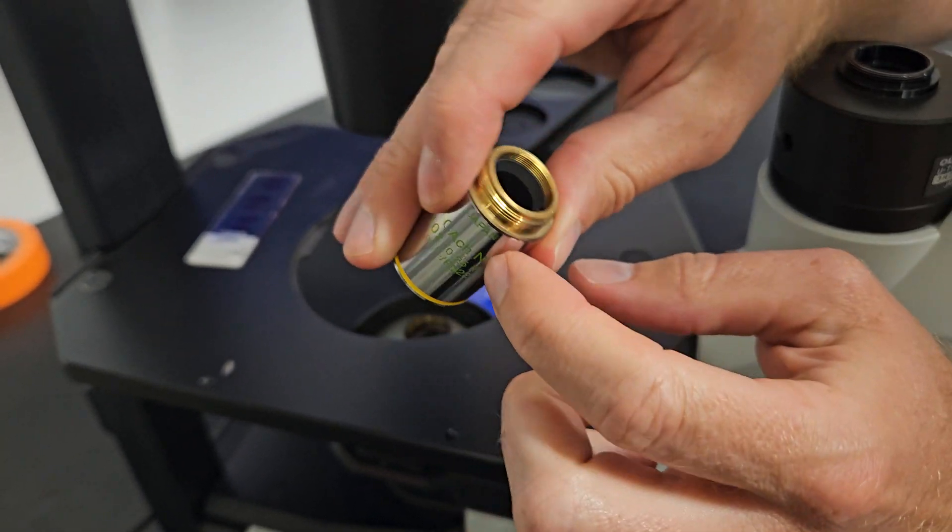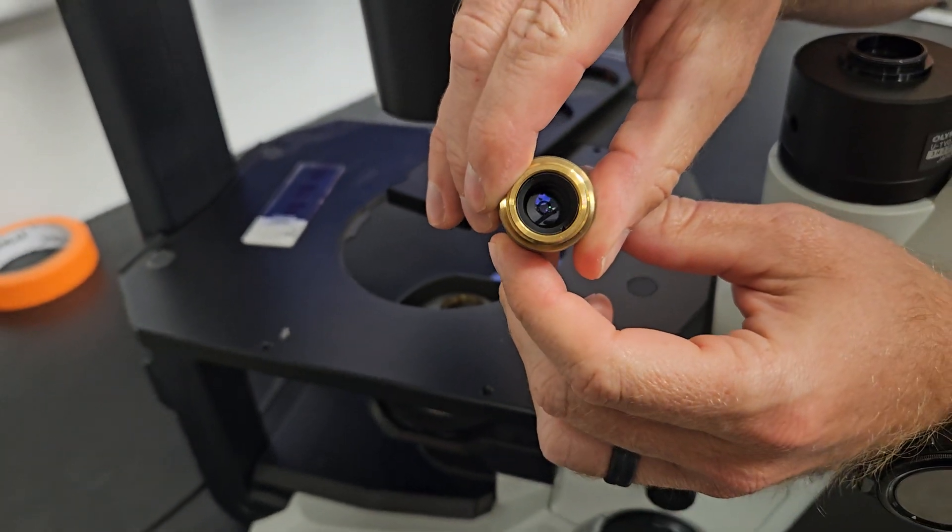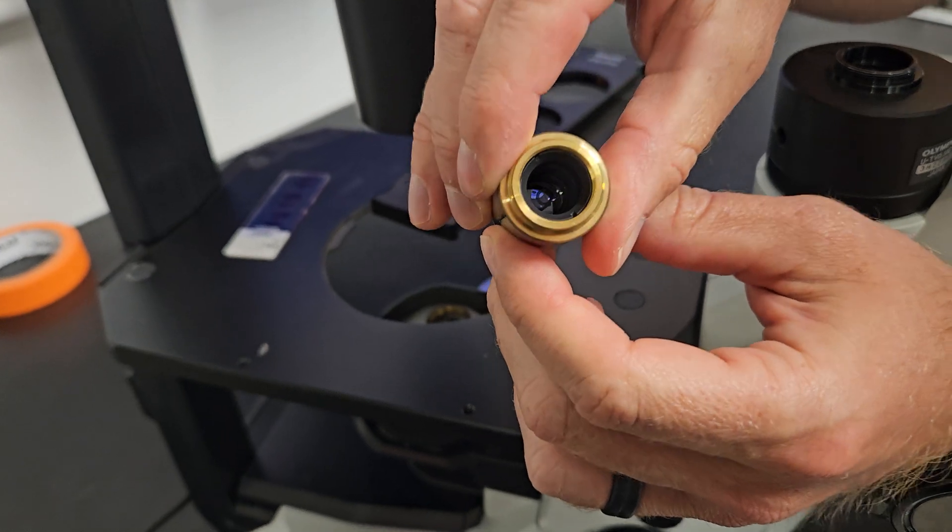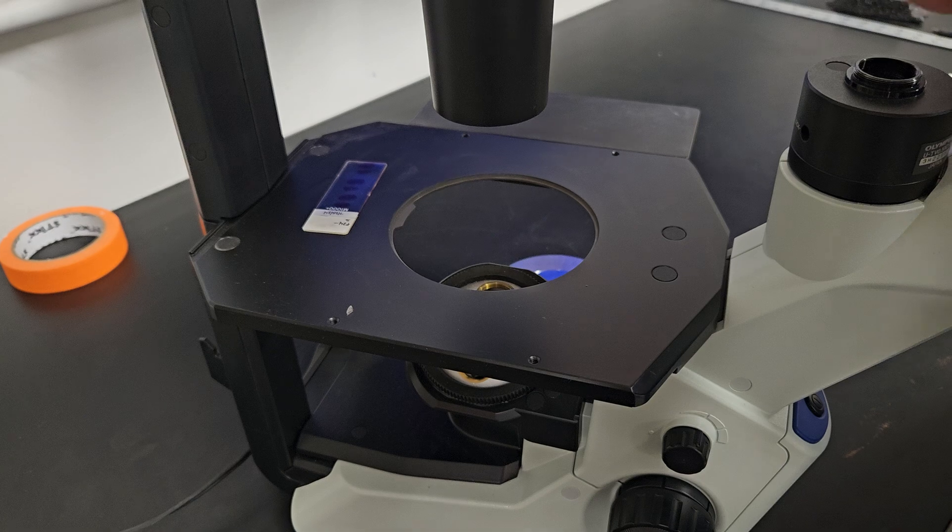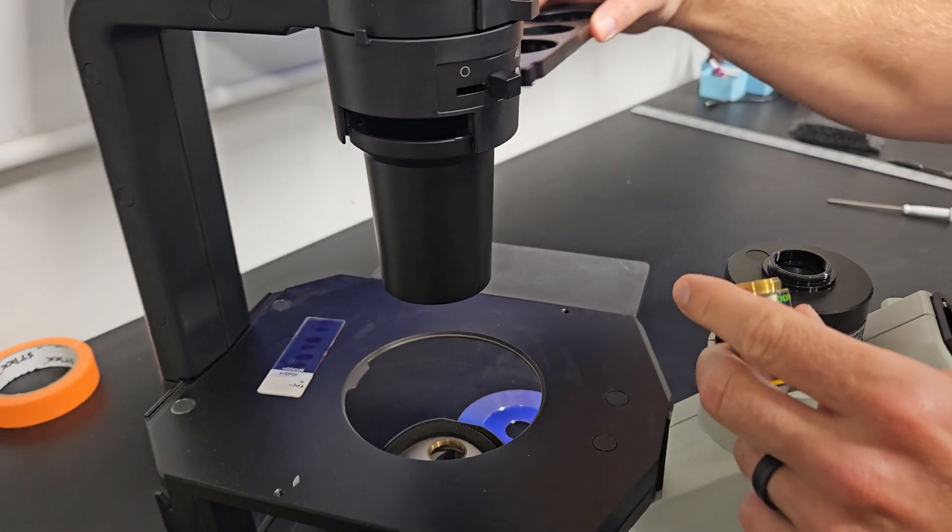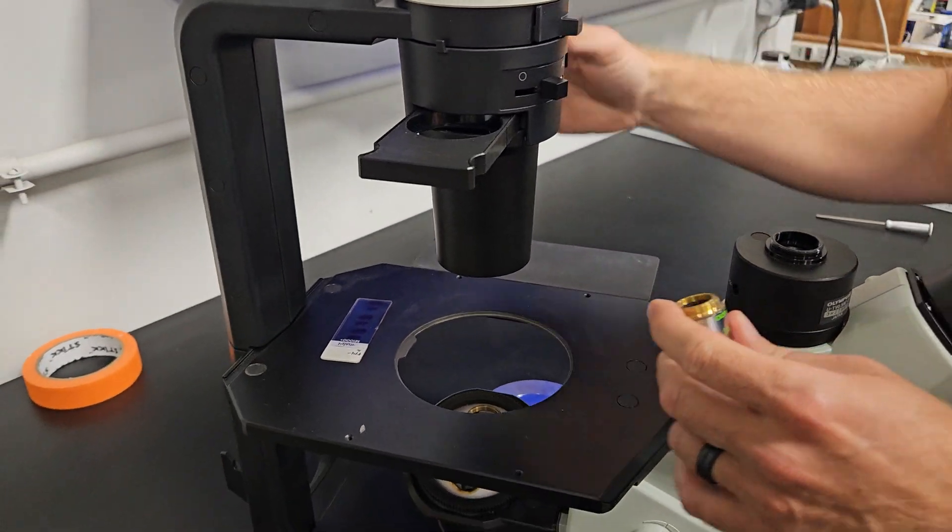That means that the phase ring inside this objective, I don't know if you can see it. Can you see it, Mike? Yeah, I can see it. Okay. So there's a phase ring in here that corresponds to this phase ring. And then that creates the phase contrast you're looking to see in your cells.